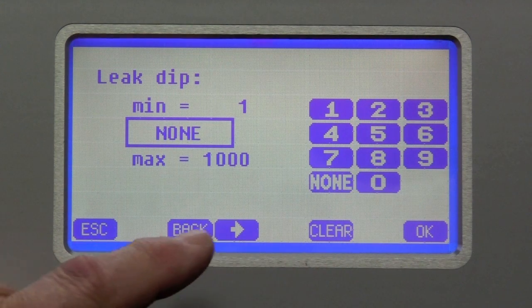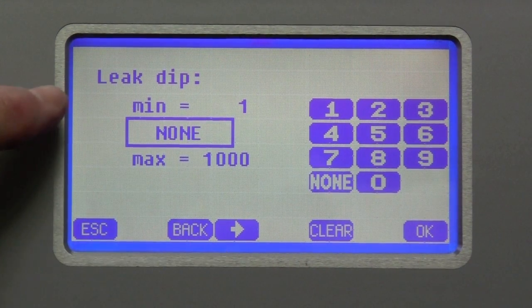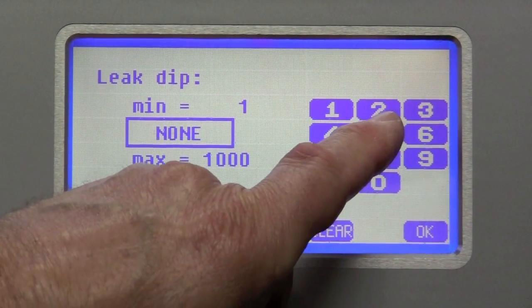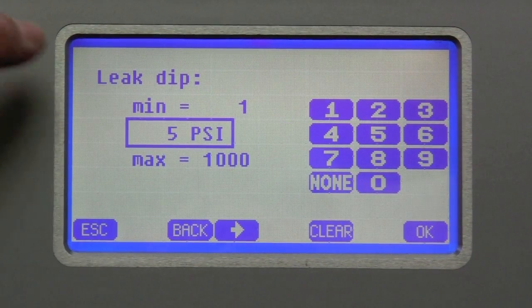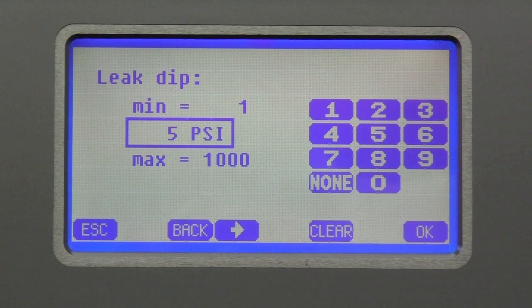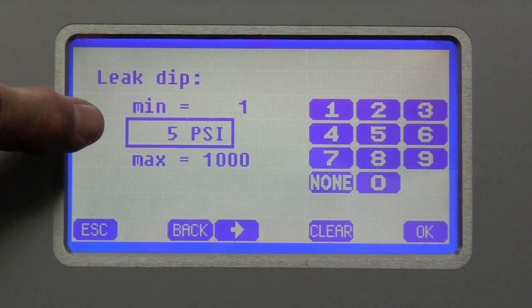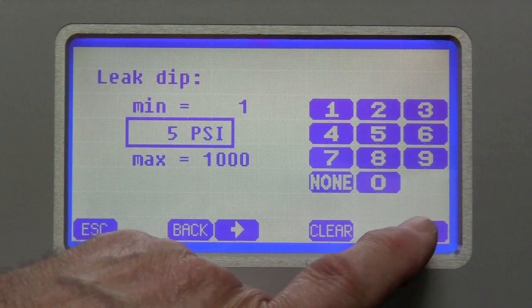However, if the leak is smaller than that, we use a different term called leak dip. And we're going to use 5 PSI leak dip. So that means that if at any time during the leak detection period, it drops more than 5 PSI, it will declare a leak.